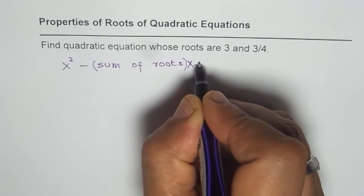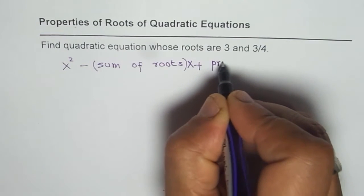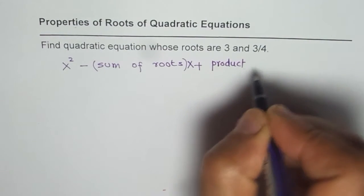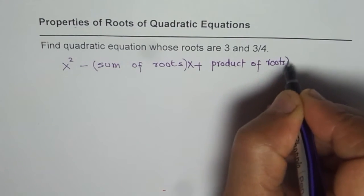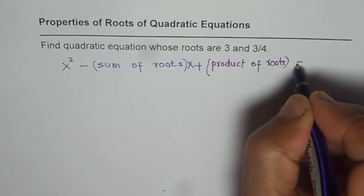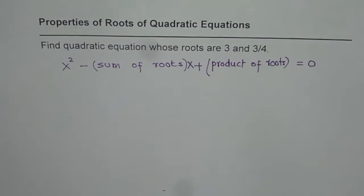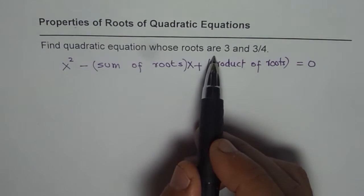plus product of roots equals to 0. And that is how we are going to find the quadratic equation whose roots are given to us. We are going to apply this formula.